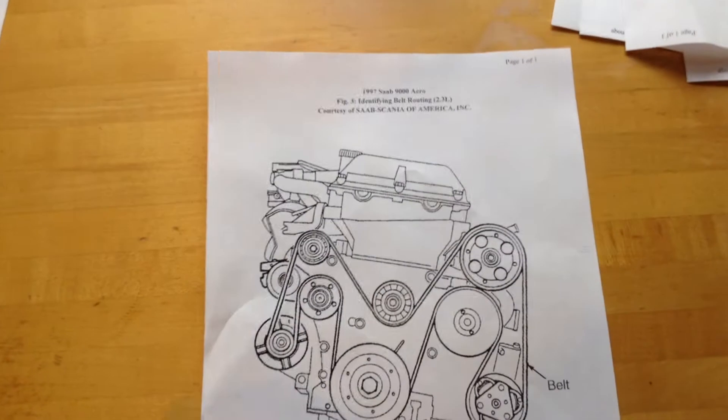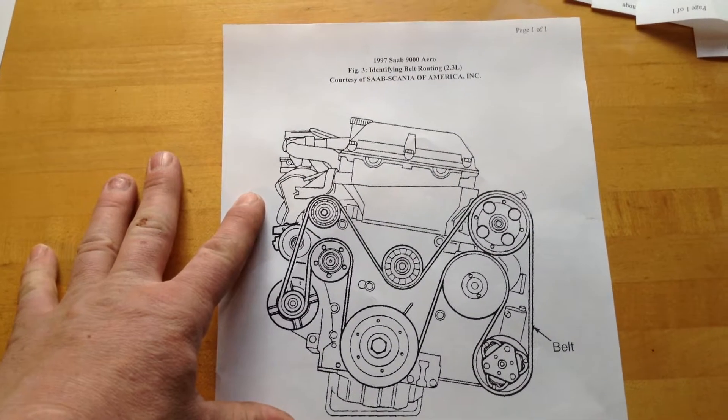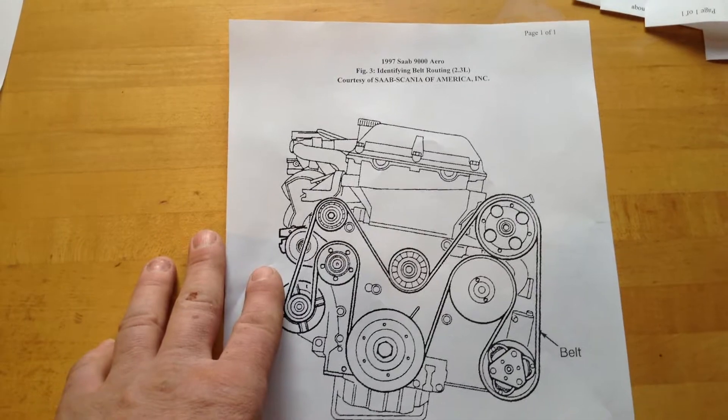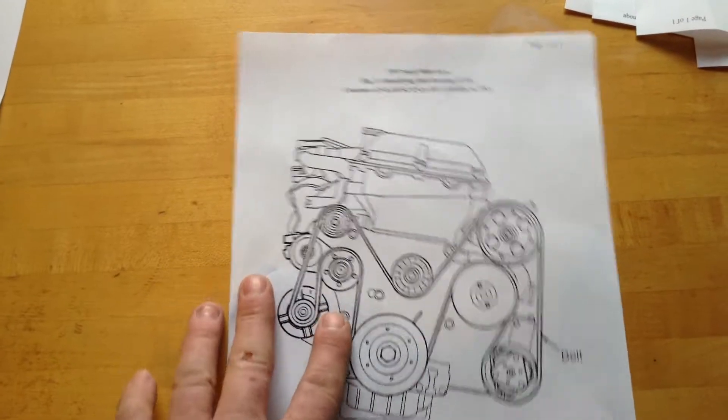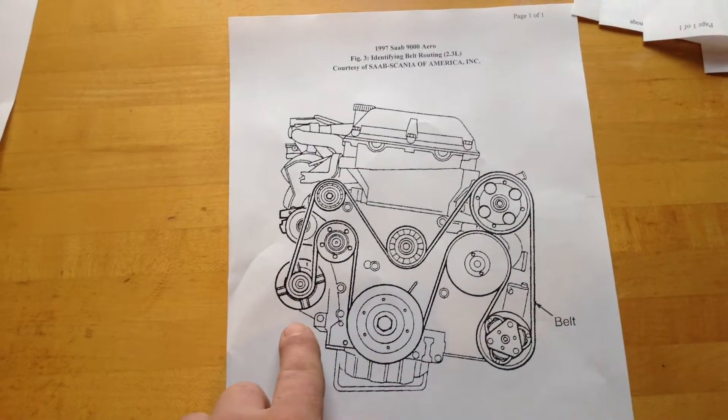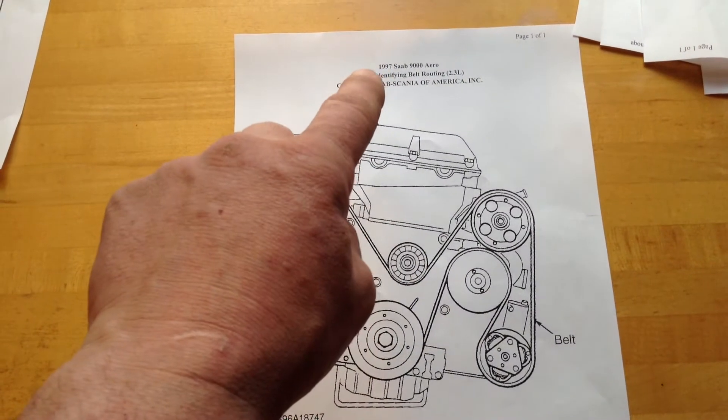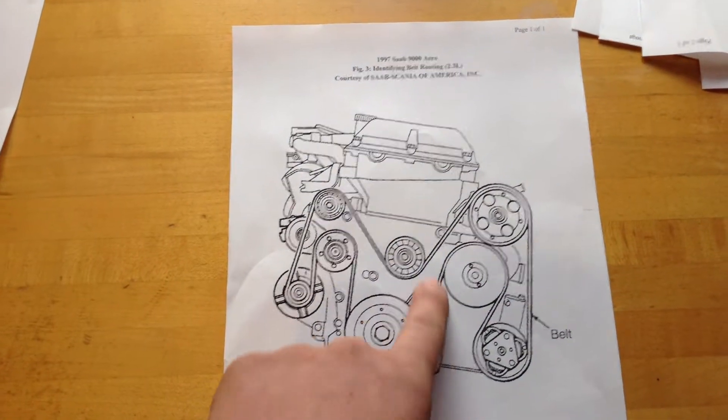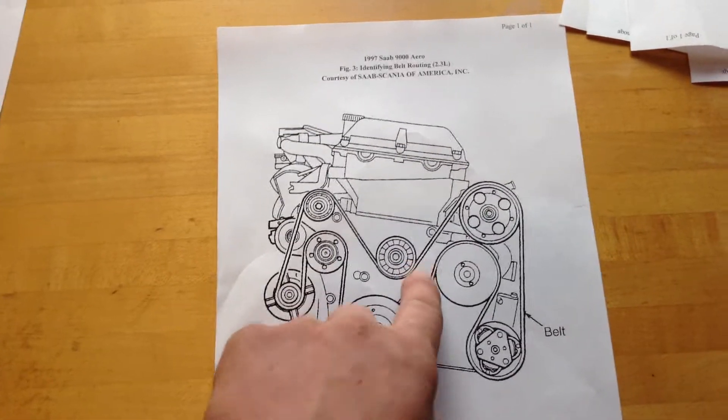And then I got this one here. Says it's for a 97, 2.3, but as you can see it's different than the other one. I think this would be the engine like in a 95. Sometimes, you know, they're not categorized right. I know this isn't like a regular 9000 aero because the tensioner's over here and all that.